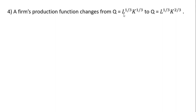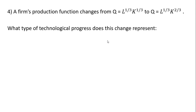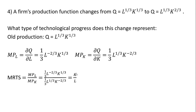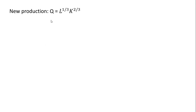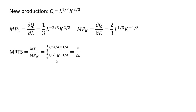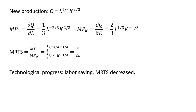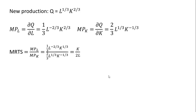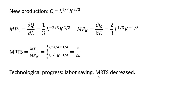Example 4: a firm's production function changes from one form to another. With the old production function, we get the marginal product of labor and marginal product of capital. Forming the marginal rate of technical substitution, this simplifies nicely to K divided by L. With the new production function, we get the marginal product of labor and marginal product of capital, and forming the marginal rate of technical substitution, we get K divided by 2L. So the marginal rate of technical substitution decreased — it went from K divided by L to K divided by 2L — and this represents labor-saving technological progress.